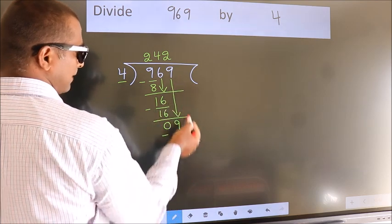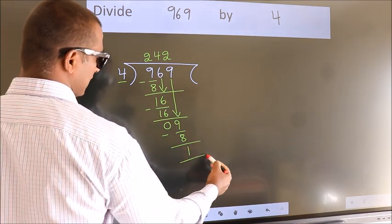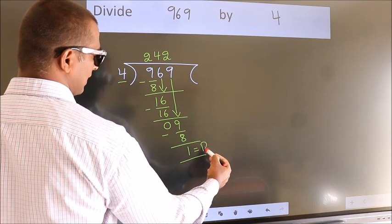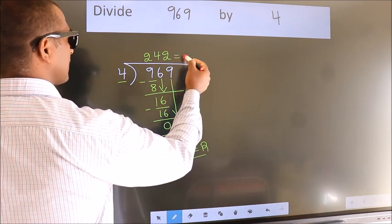No more numbers to bring down. So we stop here. This is our remainder. This is our quotient.